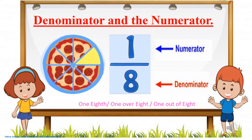In normal fractions, called proper fractions, the numerator is smaller than the denominator. Such fractions are called proper fractions. But there are some instances where the numerator is bigger while the denominator is small — in that case you call those improper fractions. You will learn about those in the coming years.